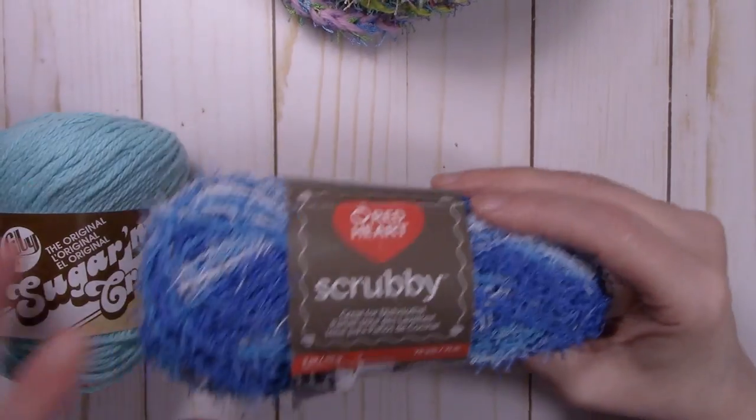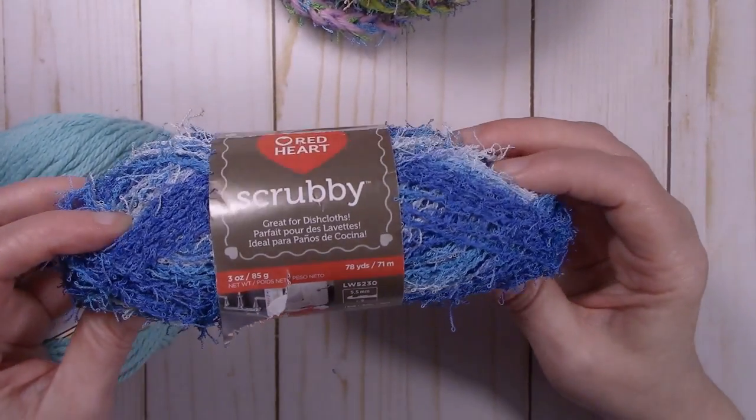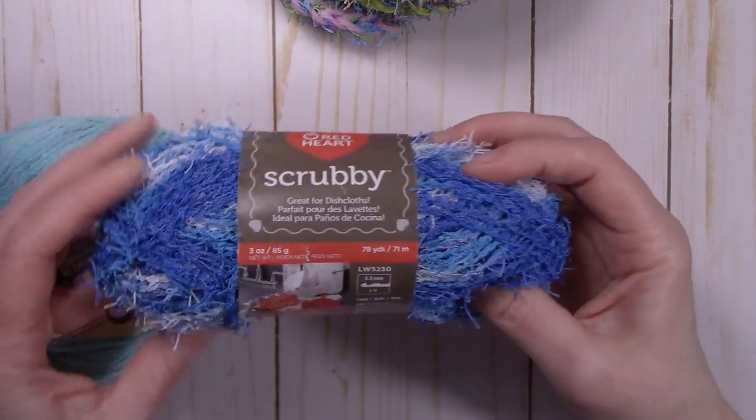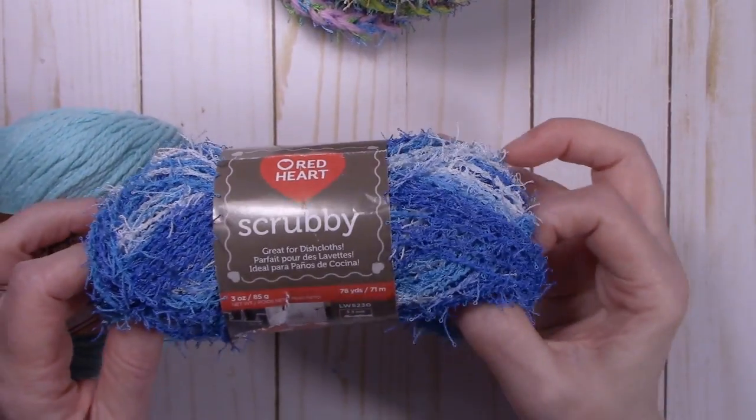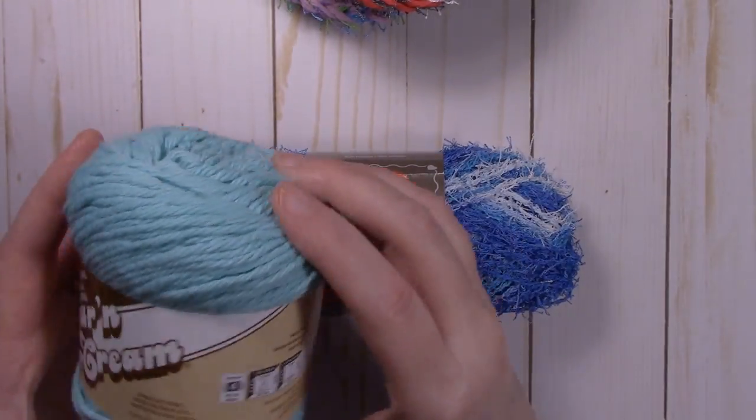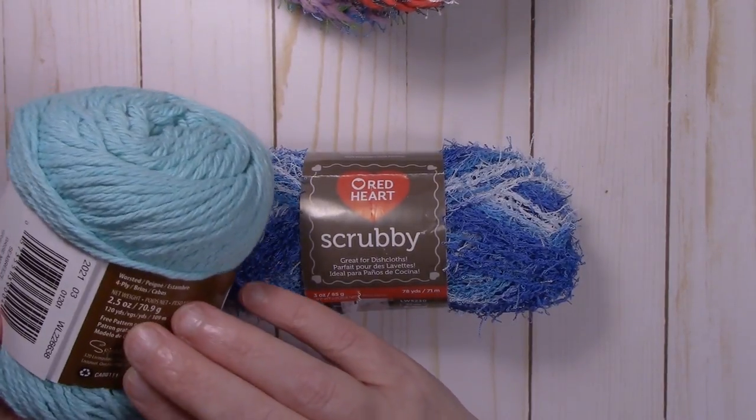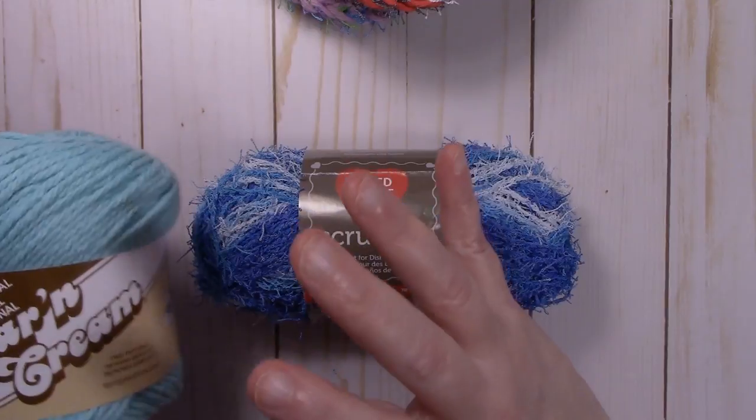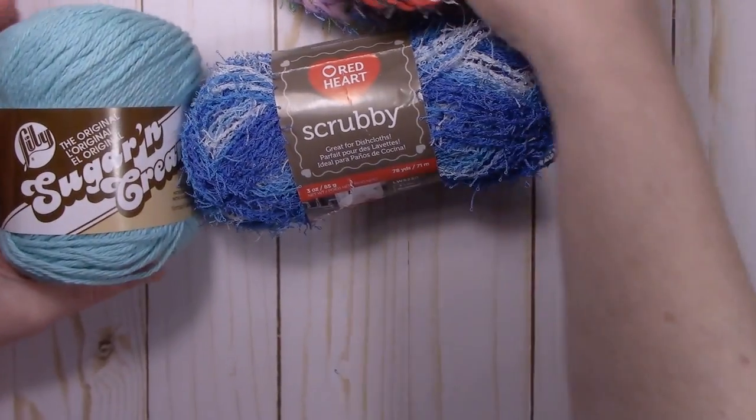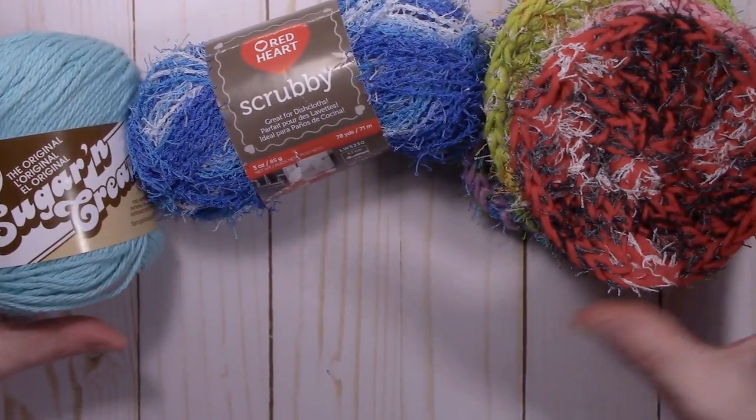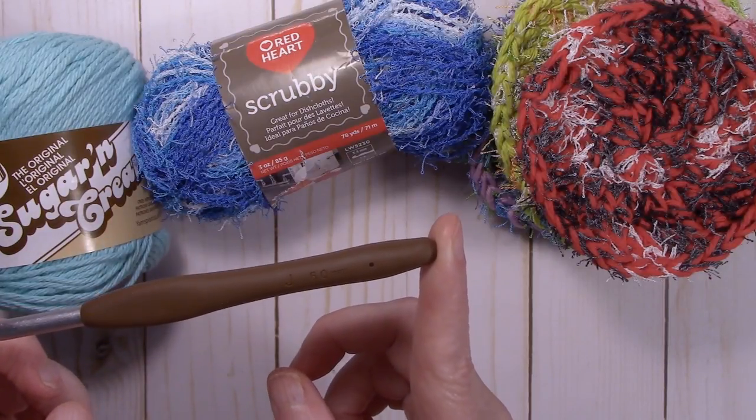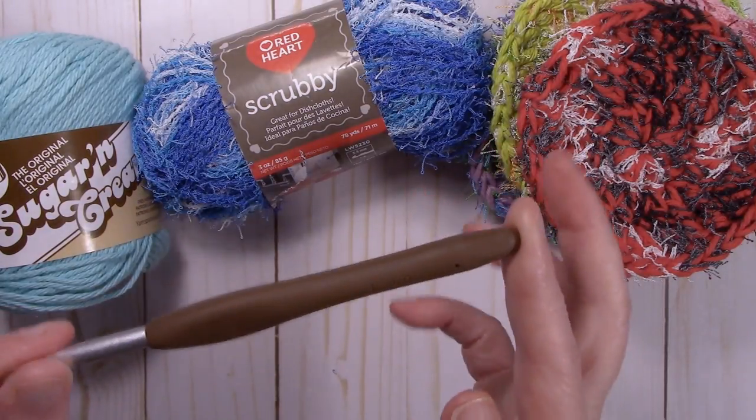So one ball of the scrubby yarn, which comes in a three ounce ball, 85 grams, 75 yards, 100% polyester, should make you about six of these scrubbies. You'll combine it with one two and a half ounce ball of Lily Sugar and Cream. The hook size I used is a J 6.0mm hook. I'm going to be using my Clover Amora hook today.